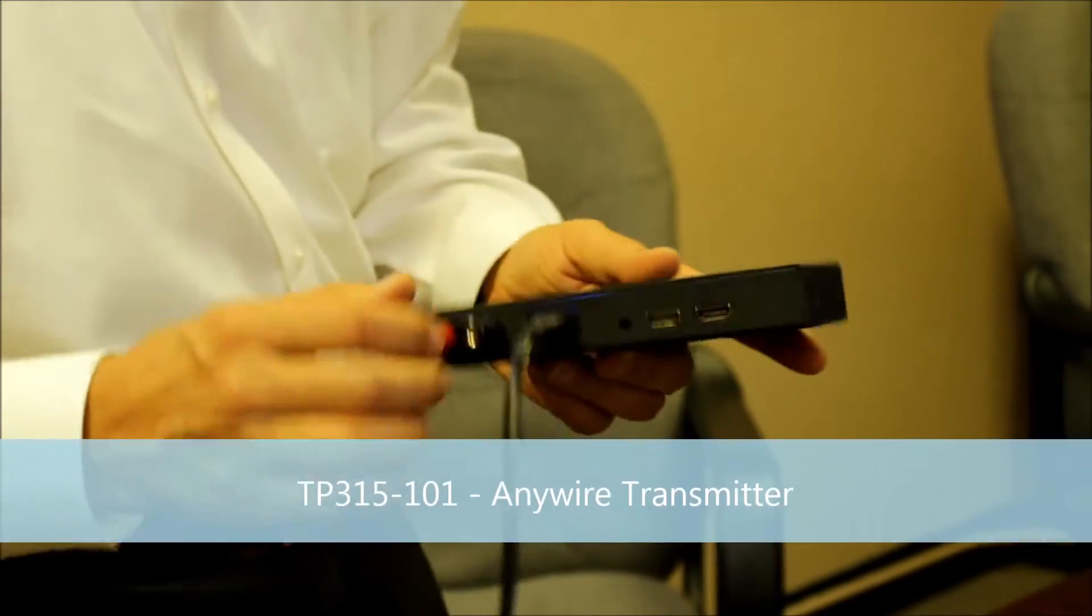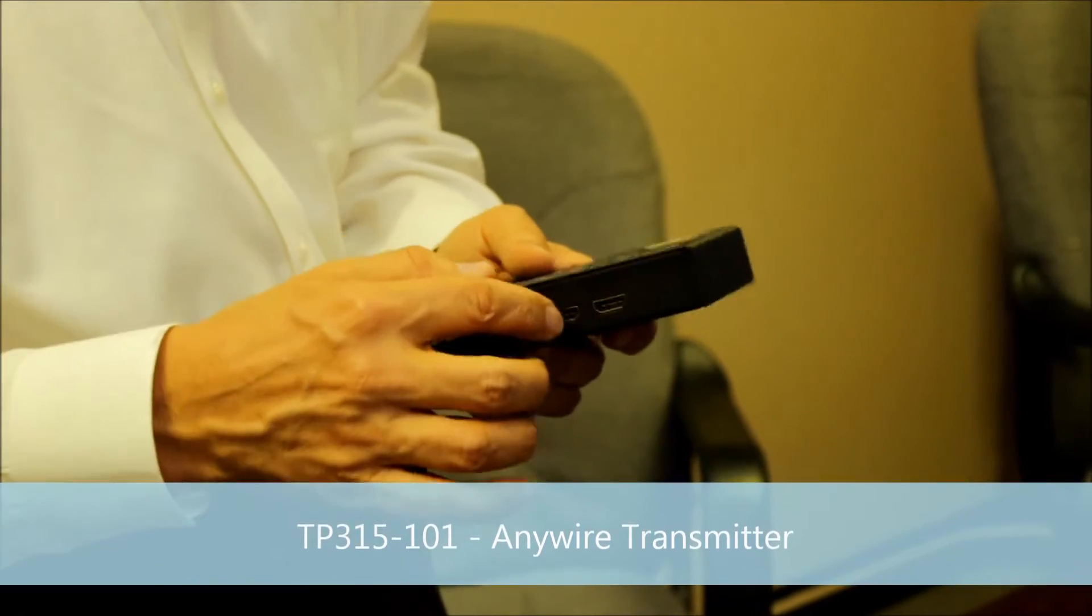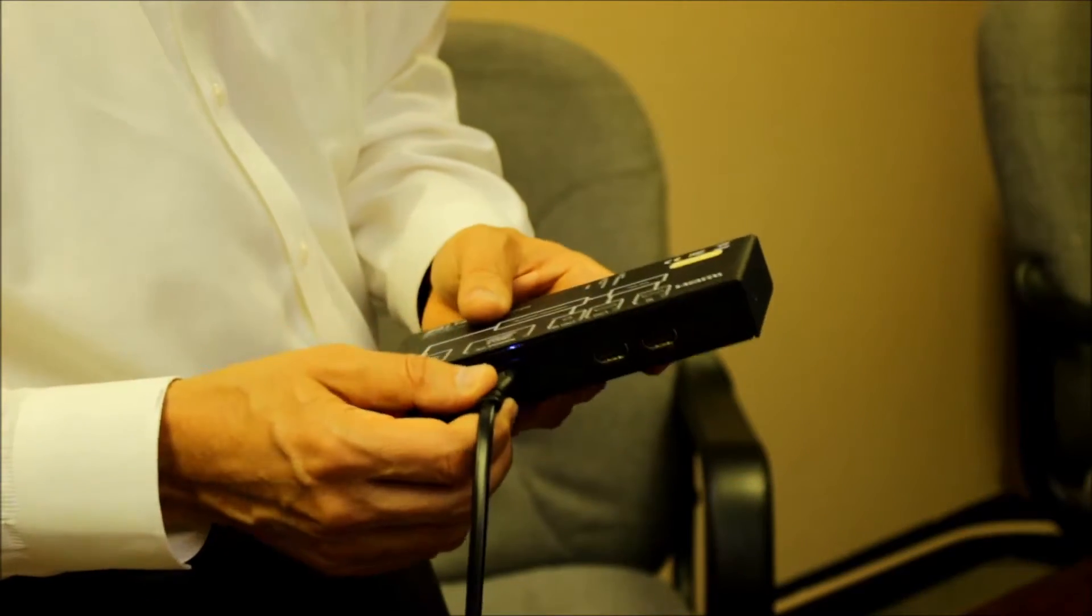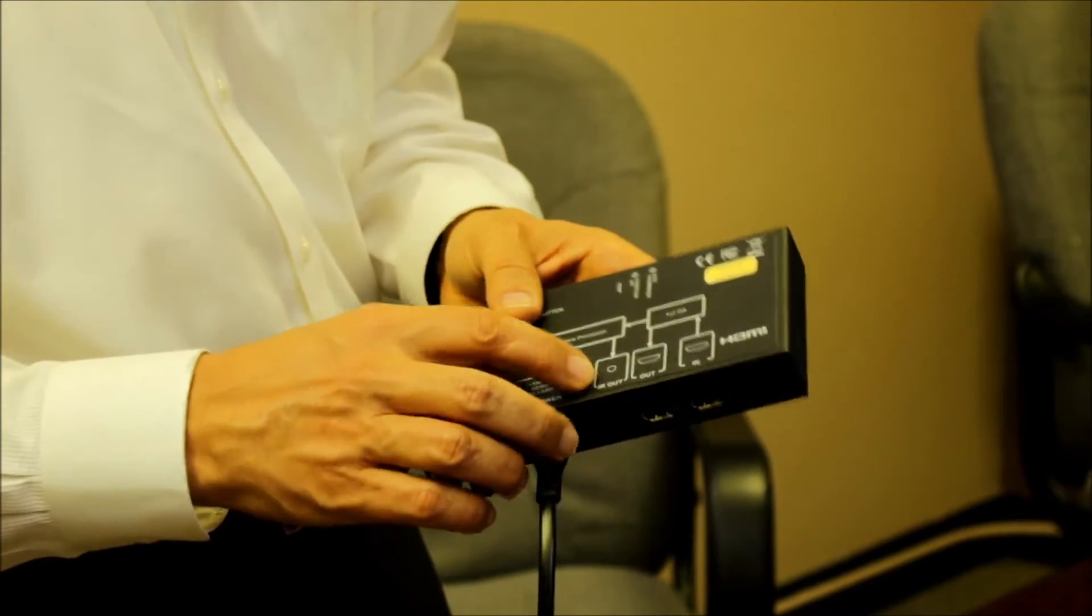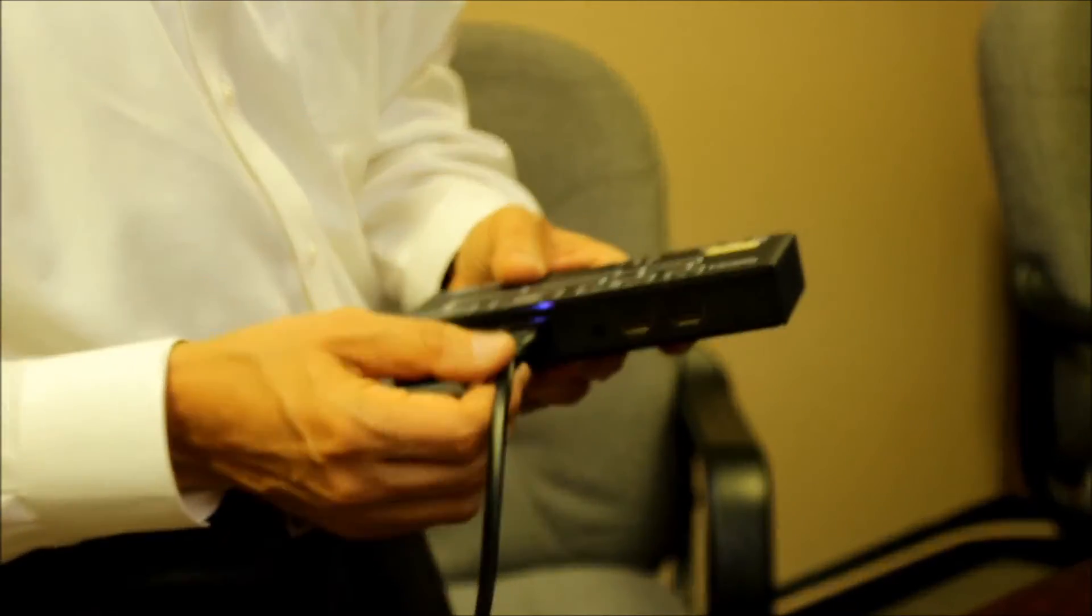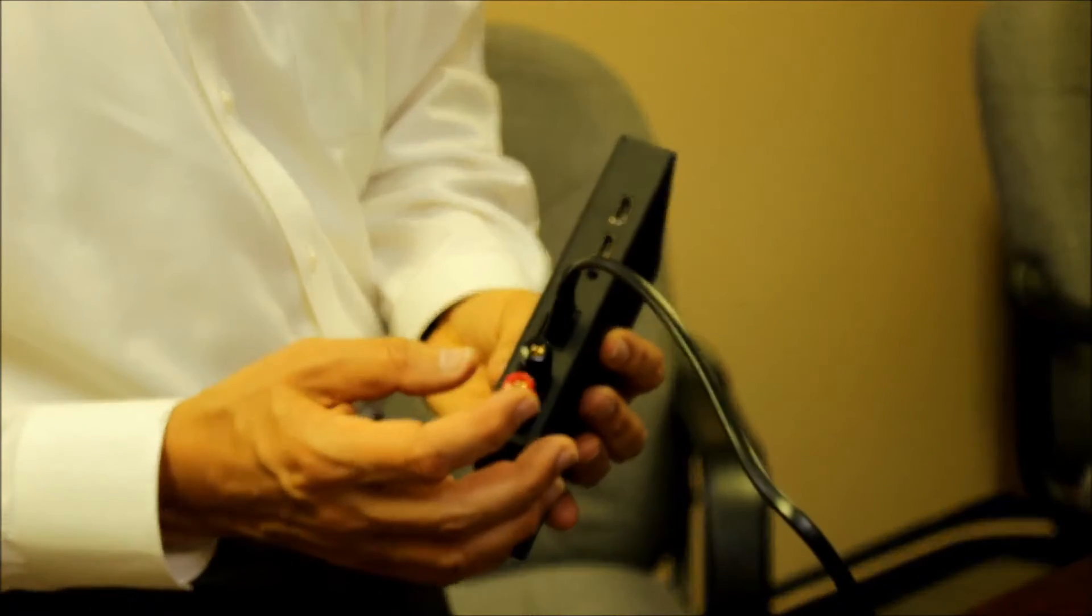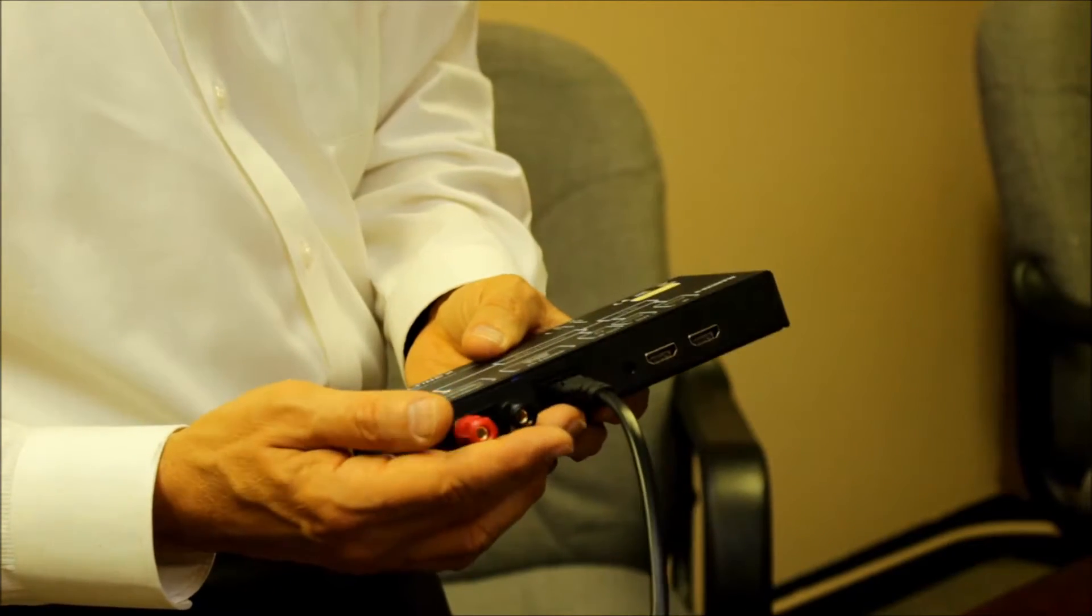Here we have the transmitter. The transmitter has an input, it has a local output so if you have a local monitor you can have local output. It has IR out so you can transmit the IR signal from the television back into the rack. AC powered, and again you have a terminal block or banana plugs where you can connect anything.